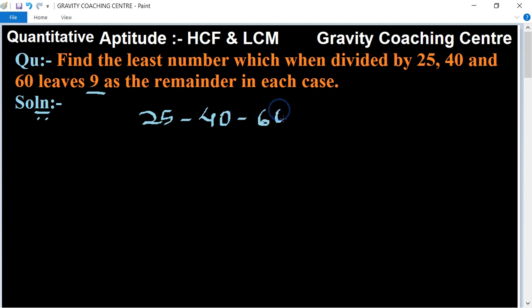Let's take the LCM of all three. We will cancel them using the table of 5. Dividing by 5 gives us 5, 8, and 12.